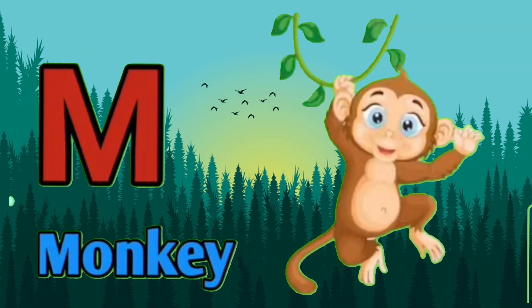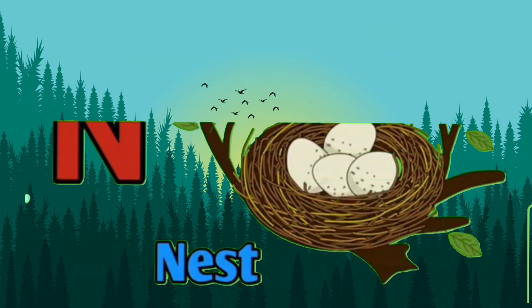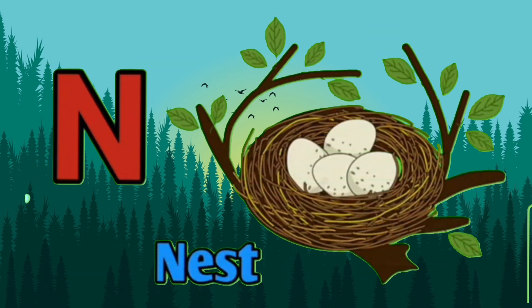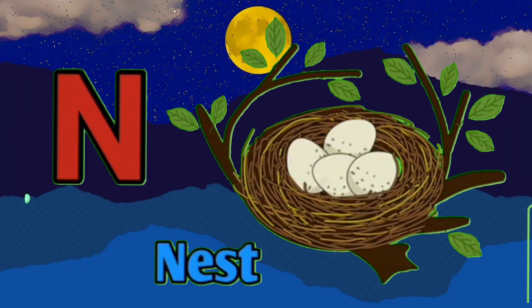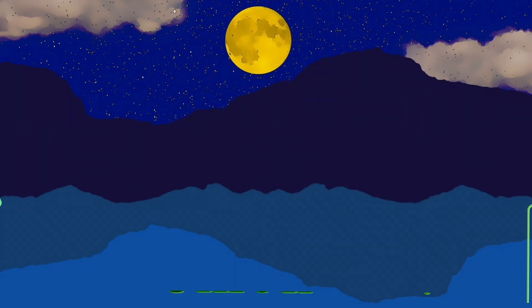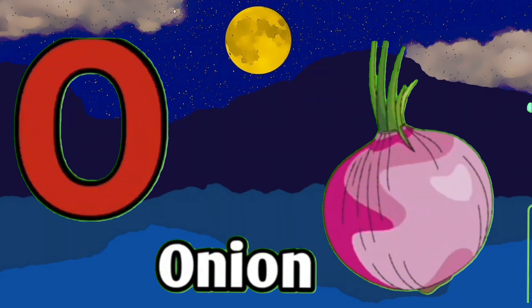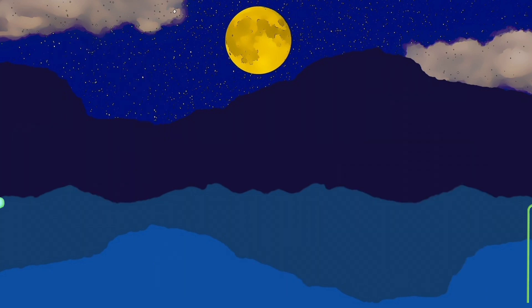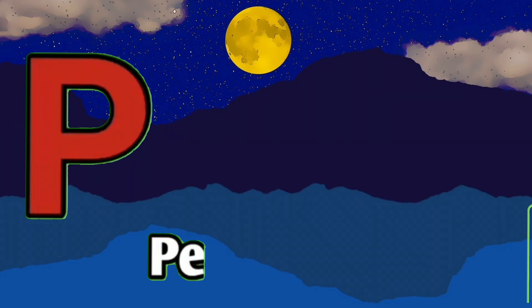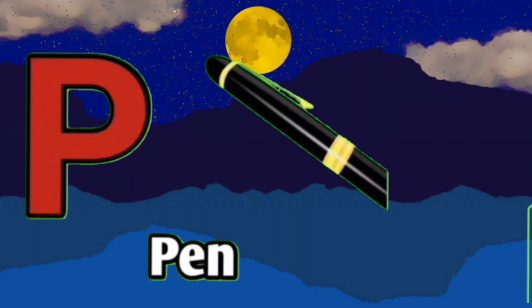M for monkey, N for nest, O for onion, B for pen.